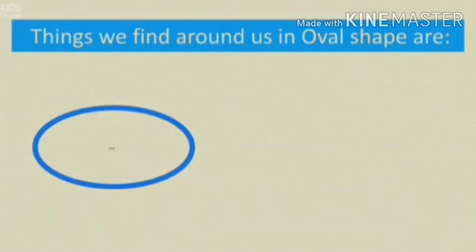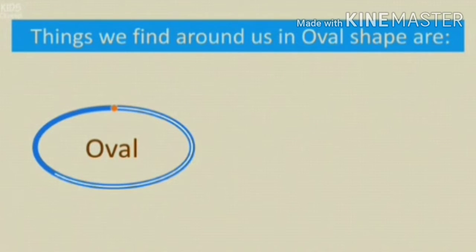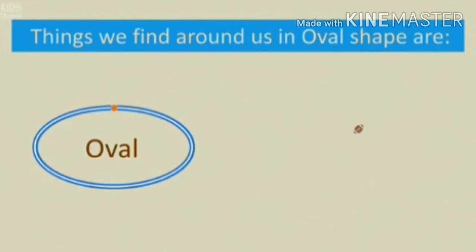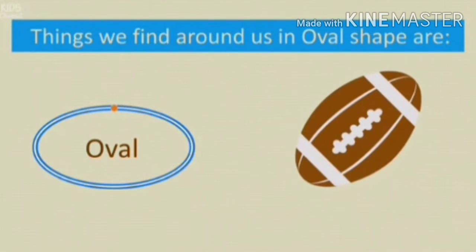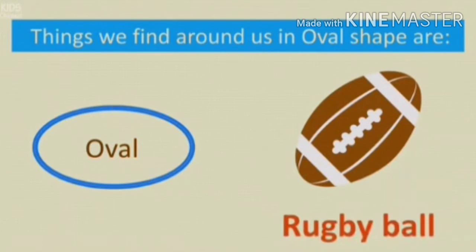So things we find around us in oval shapes are — now we will see things in oval shape. This is a rugby ball. This is in oval shape.